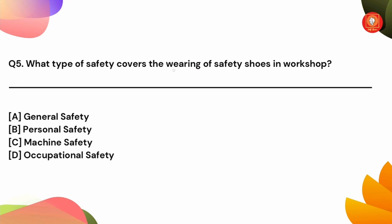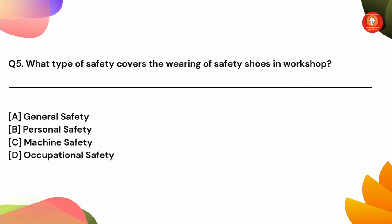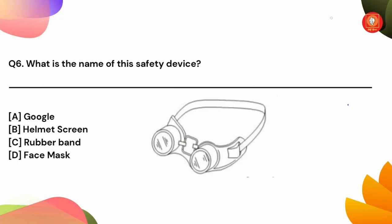Question number 5: what type of safety covers the wearing of safety shoes in a workshop? The leg is part of your personal body. So, the answer is B — personal safety.